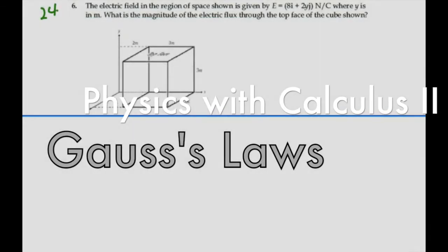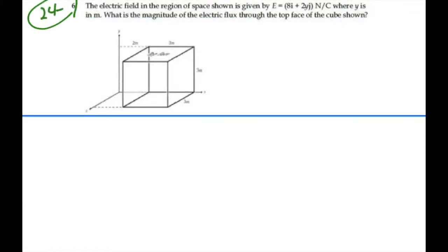Here's problem 24-6. The electric field in the region of space shown is given by E equals 8i plus 2yj newtons per coulomb, where y is in meters. What is the magnitude of the electric flux through the top face of the cube shown?